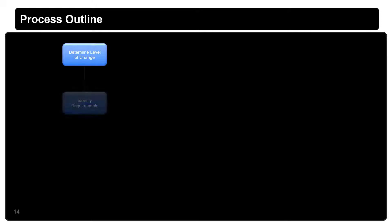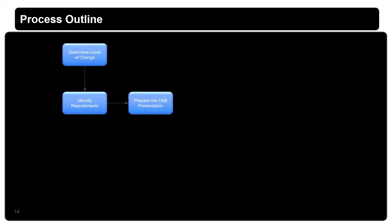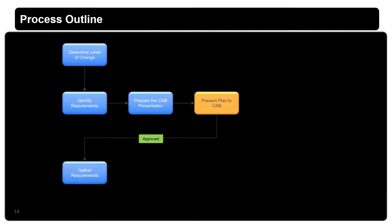The process is outlined here in this diagram. First, determine the level of the change — the change level will identify the list of requirements. Then prepare the CAB presentation with the overall plan, convene the CAB, and present it. If the CAB is approved, start gathering all of the relevant information and start the experiments.